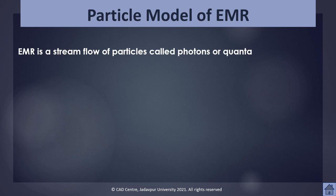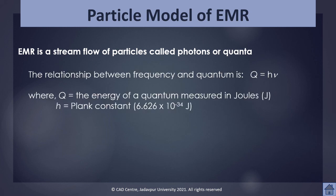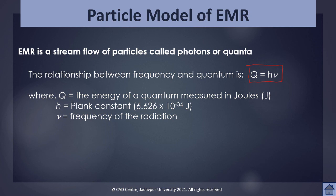Electromagnetic radiation can also be explained using the particle model. In the particle model, electromagnetic radiation is described as a stream flow of particles called photons, quanta, or energy packets. The relationship between frequency and the quantum is: Q = Hν, where Q is the energy of a quantum measured in joules, H is Planck's constant (6.626 × 10⁻³⁴ joule-seconds), and ν is the frequency of the radiation.